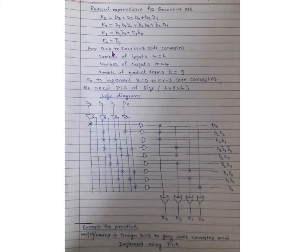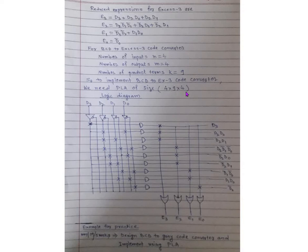Now writing these reduced expressions for E3, E2, E1, and E0: for the BCD to XS3 code converter, the number of inputs N is 4 (D0, D1, D2, D3), and the number of outputs M is 4 (E3, E2, E1, E0). Counting all unique product terms — 1, 2, 3, 4, 5, 6, 7, 8, 9 — all are unique. So to implement this converter we require a PLA of size 4 × 9 × 4.